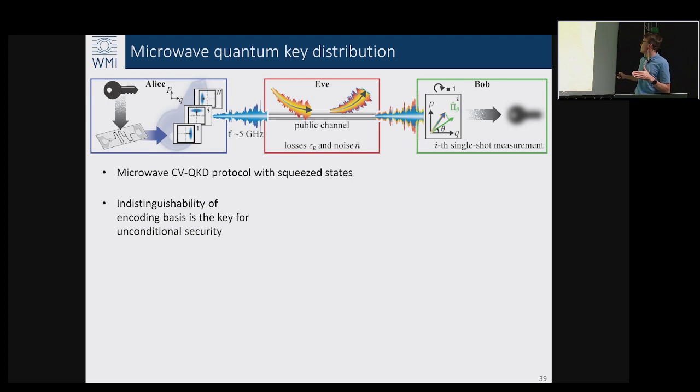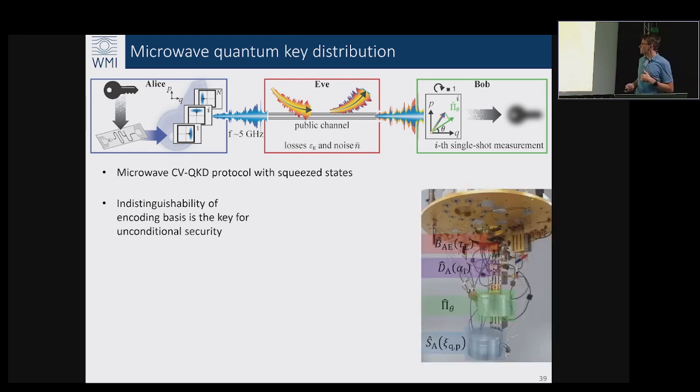This is what we call Eve. Then we would have to do a single shot projective measurement, which was also an important part for us. This is how our setup looked like: these two JPAs, one producing squeezing, then this device the asymmetric beam splitter which was doing the displacement and key encoding, and that was the second JPA producing the single shot quadrature measurement.